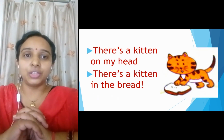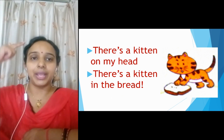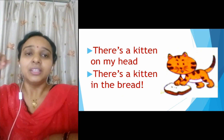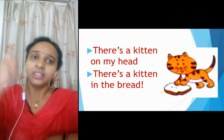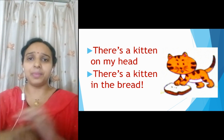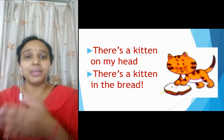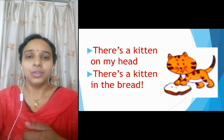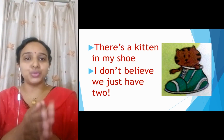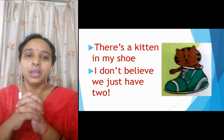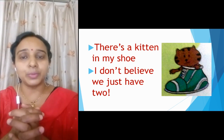There is a kitten on my head. Now where are they? They are on the head. There is a kitten on my head. There is a kitten in the bread. There is a kitten in my shoe. I don't believe we just have two.